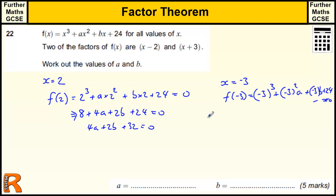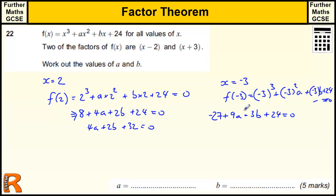So minus 3 cubed is minus 27. You could use your calculator for this if you need to, just to make sure. Minus 3 squared is just 9a, and minus 3 lots of b, plus 24 equals 0. So minus 27 plus 24 is minus 3, so we've got 9a minus 3b minus 3 equals 0.